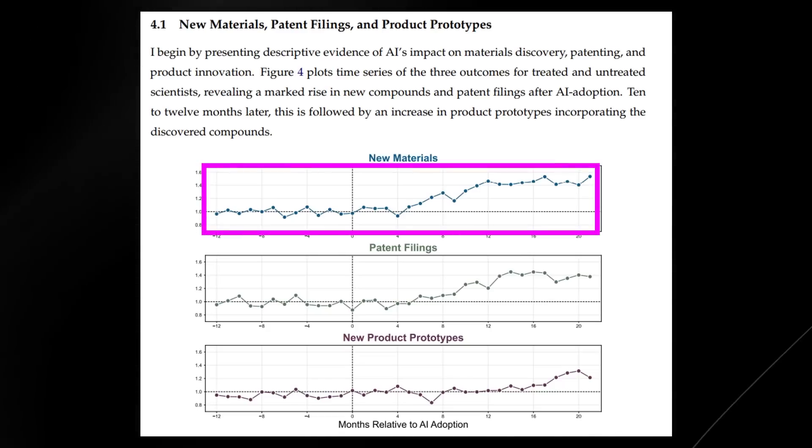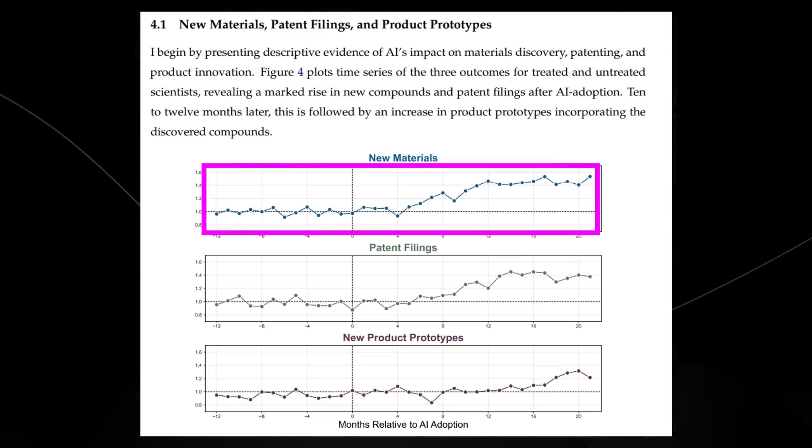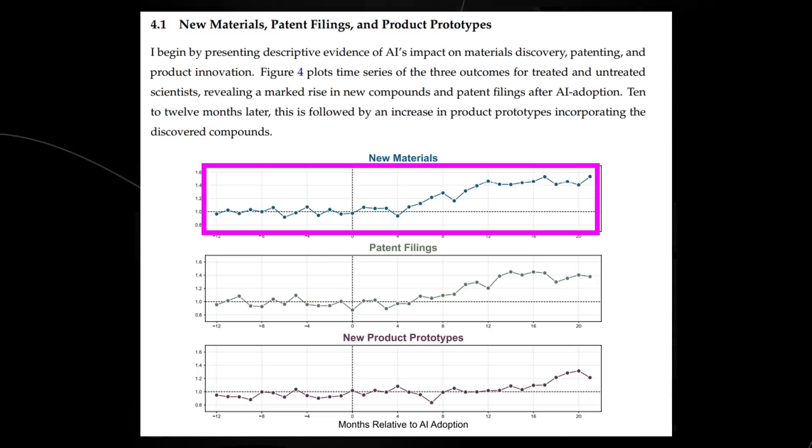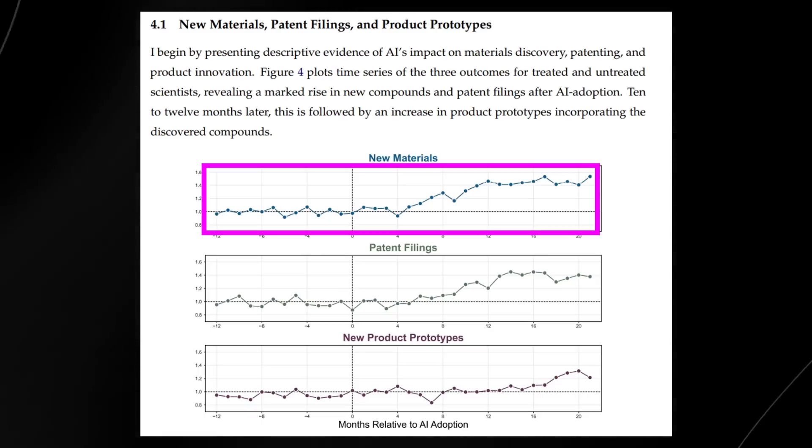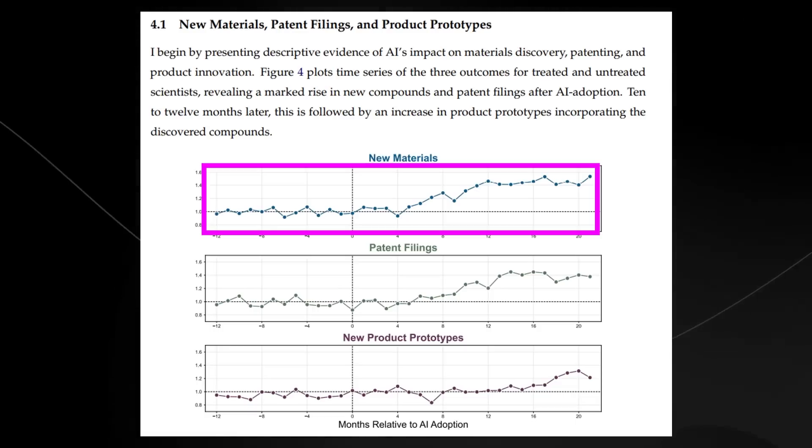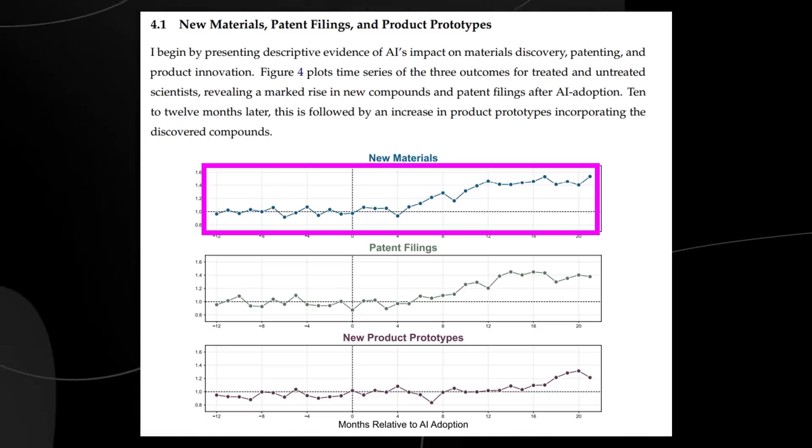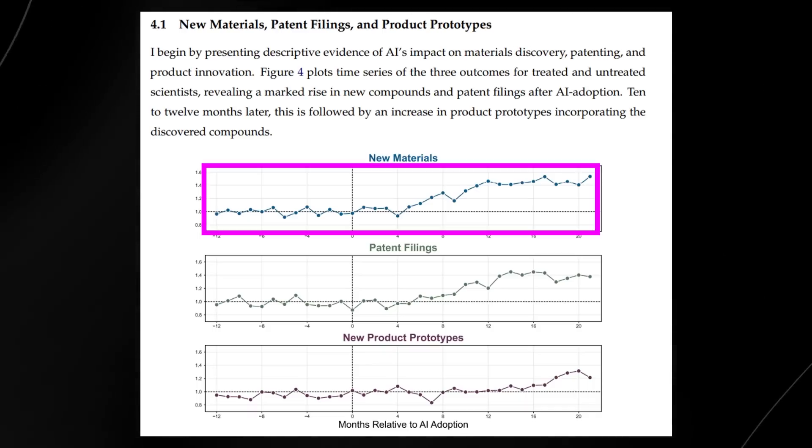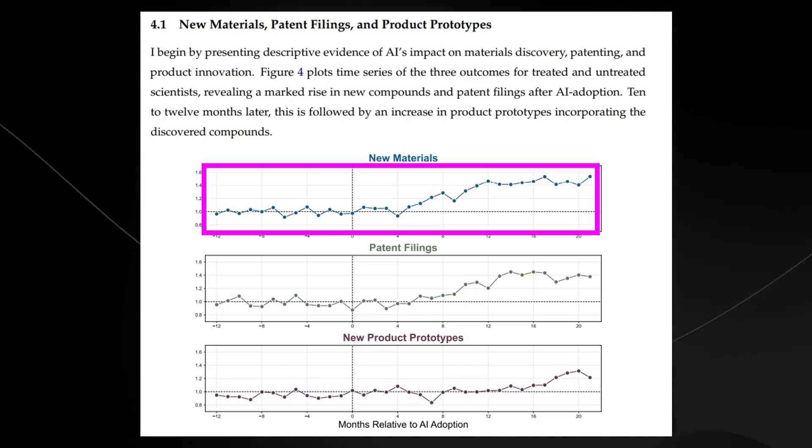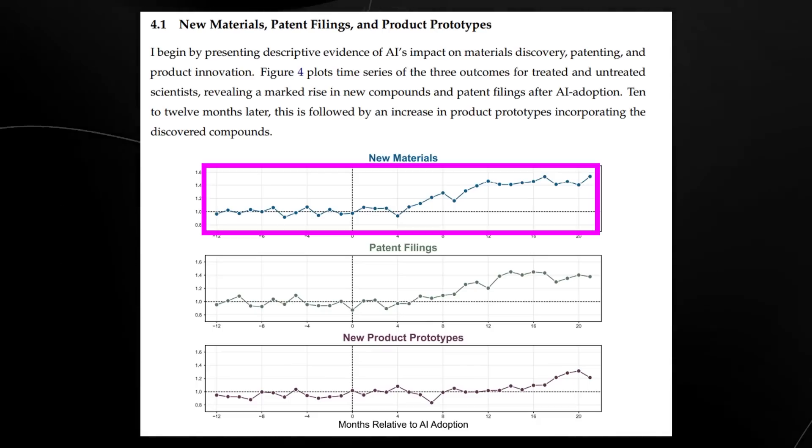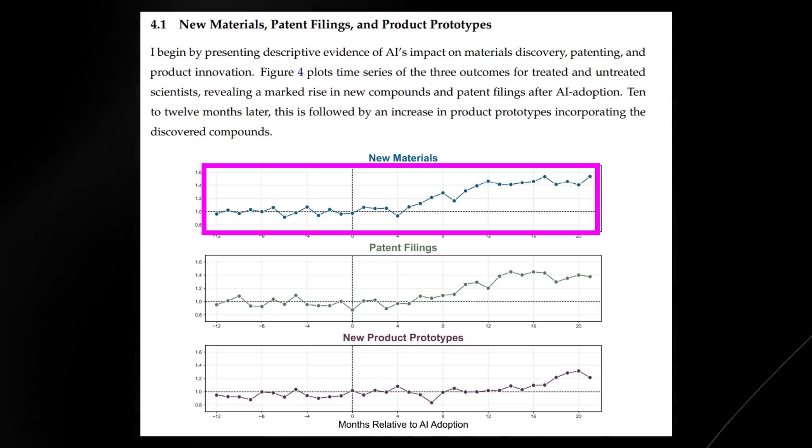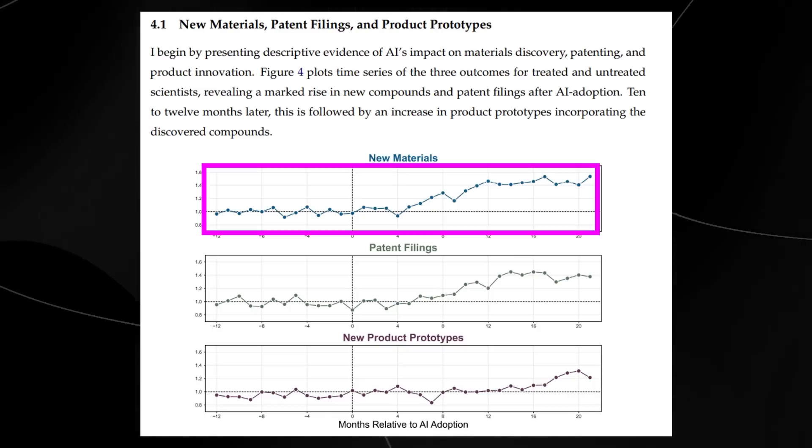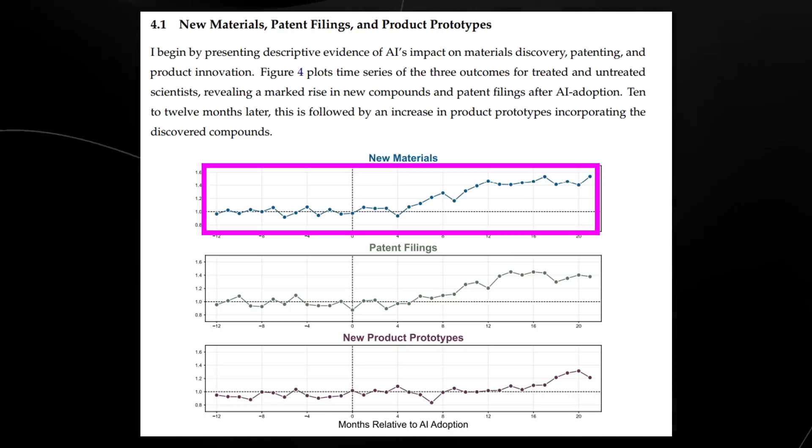The crazy thing about this is we also have this graph right here. Basically on the first graph, you can see that this one labeled new materials shows how the number of new materials discoveries changed before and after adopting the AI tool. Before adopting the AI tool, the rate of material discovery stayed relatively steady. After AI was introduced, there's a clear upward trend indicating that scientists began discovering more new materials. The AI tool helped scientists generate more innovative materials, increasing their productivity significantly, and automating the tedious parts of coming up with ideas, allowing researchers to focus on the evaluation and testing process. We can also see the same in the patent filings, we can see an increase right after the AI integration, and we can see the same in product prototypes. This is just using DNNs. But imagine what happens once you get to AGI or even ASI level AI that's able to increase the rate of discovery. It's going to be pretty crazy.